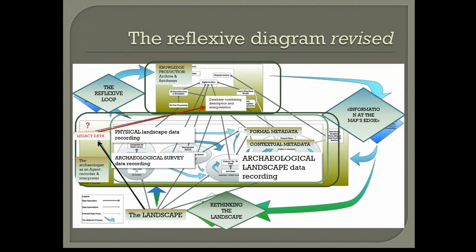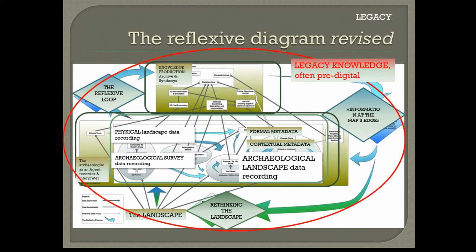It seems, though, that this option could be a bit restrictive for such a heterogeneous bunch of data that play such an important role. As an alternative, the reflexive loop could be doubled. The content of the red circle — the production of archaeological knowledge through fieldwork — had happened at a moment or several moments of archaeological research in the past, for each one of the sources of legacy information we considered.